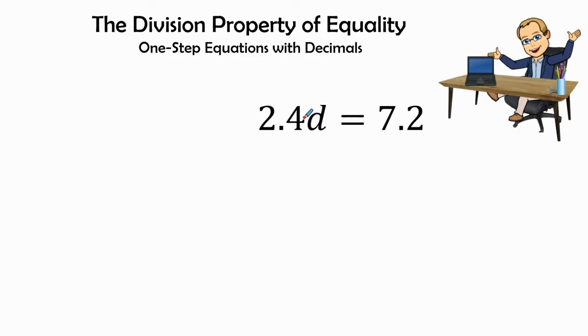The variable and the coefficient are connected together by multiplication, that means we are going to divide by the coefficient, which is 2.4.